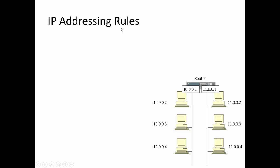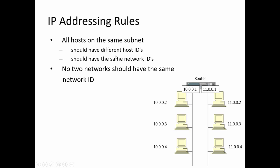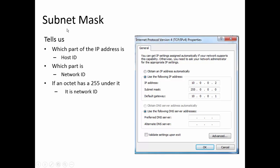IP addressing rules: all hosts on the same subnet should have different host IDs but the same network ID, and no two networks should have the same network ID. The subnet mask tells us which part of the IP address is the host ID and which part is the network ID. If an octet has 255 under it, it is network ID. For example, with IP address 10.0.0.2, the first octet has 255 under it, indicating this is network 10, workstation 0.0.2.